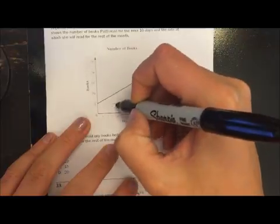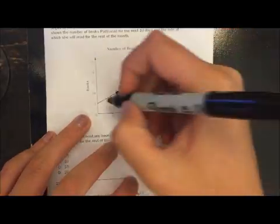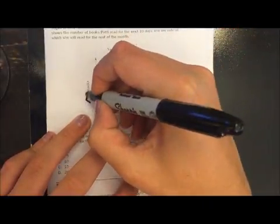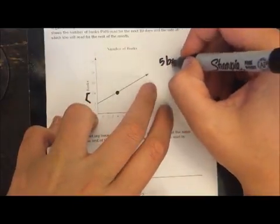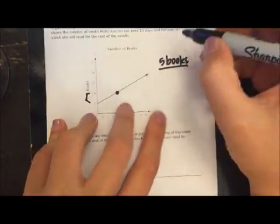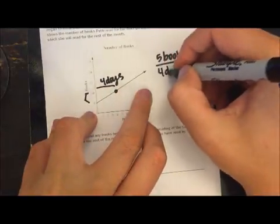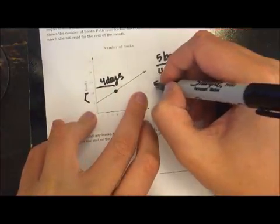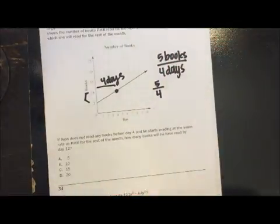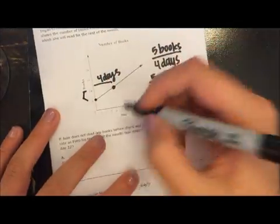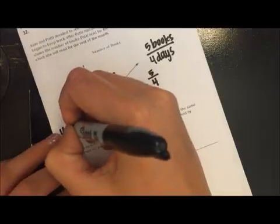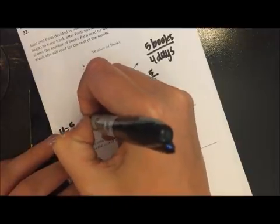So I see that a perfect point would be right here, which means that for every five books it took her four days. So her slope would be five-fourths, okay, and her y-intercept is five. So her equation would be y equals five-fourths x plus five.